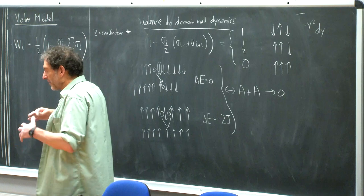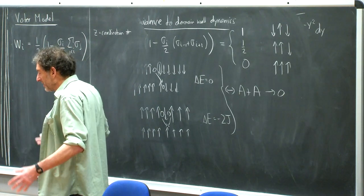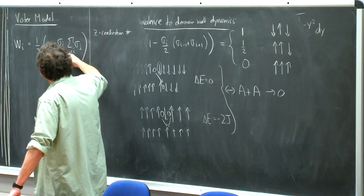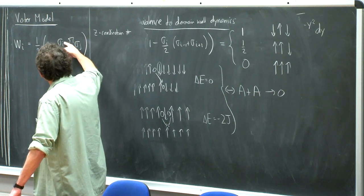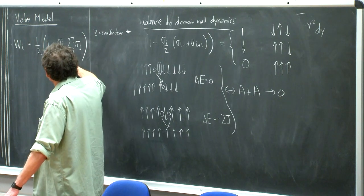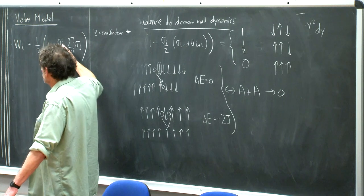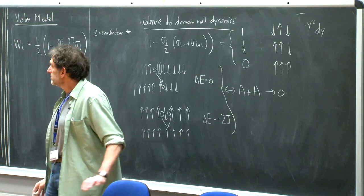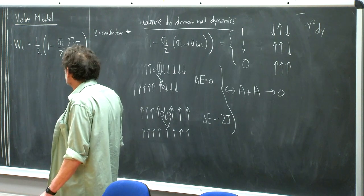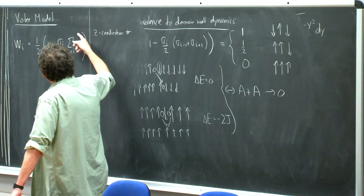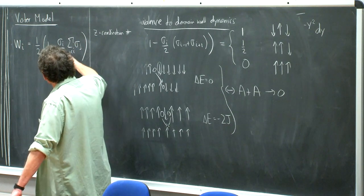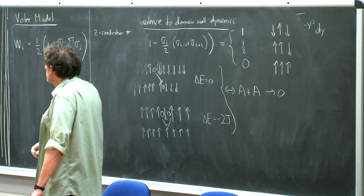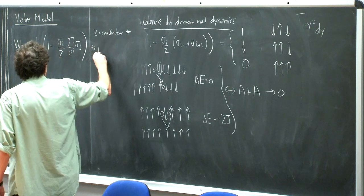The flip rate is w_i equals one-half times (1 minus sigma_i divided by z times the sum of sigma_j over neighbors j of i), where z is the coordination number. If a voter is in agreement with all neighbors (sigma_i equals sum of neighbors divided by z), the flip rate is zero. If a voter is completely surrounded by opponents, the flip rate is one. In general, the flip rate is proportional to the fraction of neighbors that disagree.